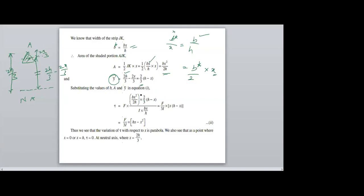Substituting A and Y-bar into the shear stress equation, with I_xx constant and width at position being B* = (B/H)·X, I will get the standard equation τ = F/(3I) · H·X minus X².